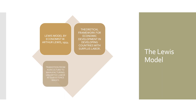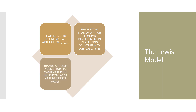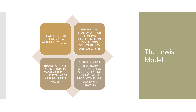The model suggests that as economies transition from traditional agriculture to modern manufacturing, there is an unlimited supply of labour available at subsistence wages. This surplus labour can be absorbed by the expanding manufacturing sector, leading to increased productivity and economic growth.